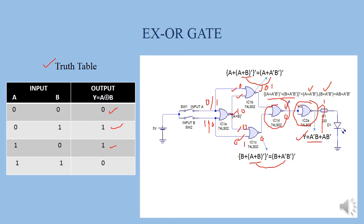The last condition: A=1, B=1 — both at logic high state. From this output we get 0. This is 1 and this is 0, so from here we get 0. This is 0 and this is 1, so from here we get 0. These two 0 lines are connected with this NOR chip, giving 1. This 1 output is connected with the inverter circuit, so from here we get 0 output. We write 0 here. This is the truth table of XOR gate, and this is the circuit diagram of XOR gate by using NOR chip only.